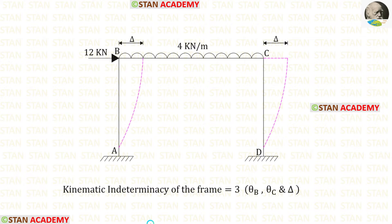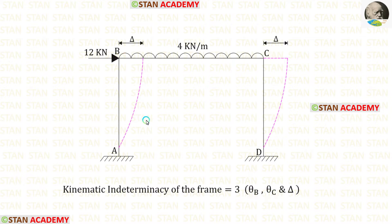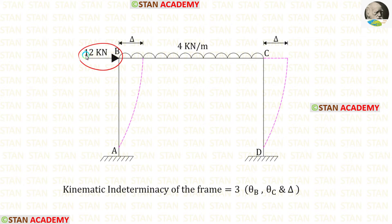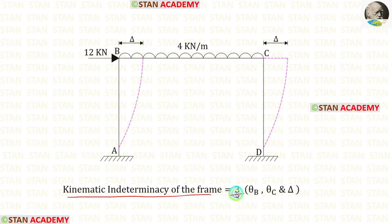Now let us find the kinematic indeterminacy of the frame. At joints B and C there will be slopes: theta B at point B and theta C at point C. This frame is a sway-type frame. Because of this point load there will be sway, and since the load acts towards the right side, the sway will occur towards the right side. So the kinematic indeterminacy of the frame is 3: slopes at B and C, and additionally the sway.